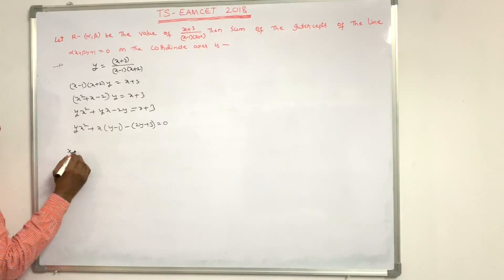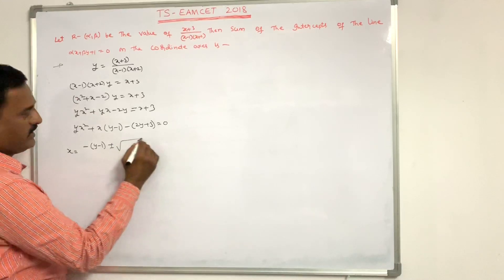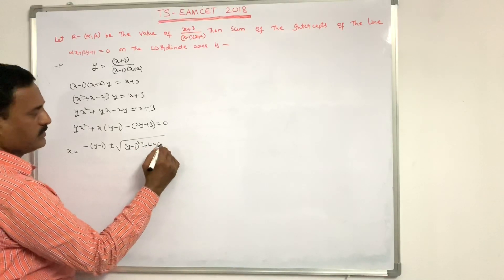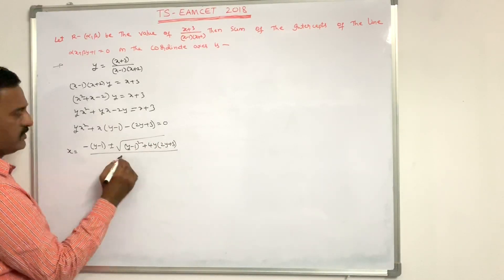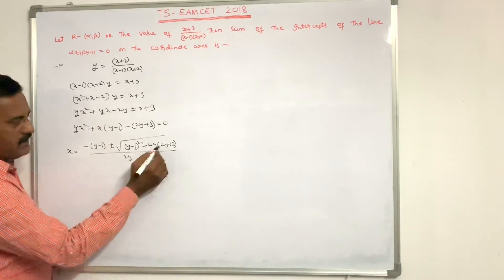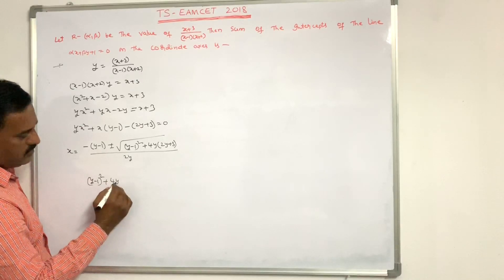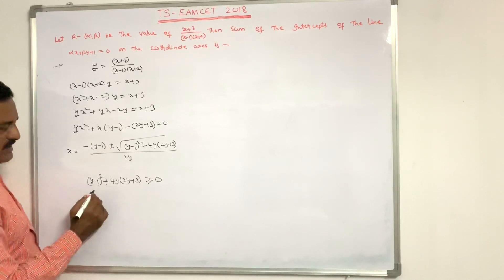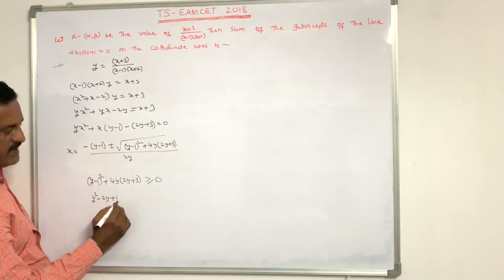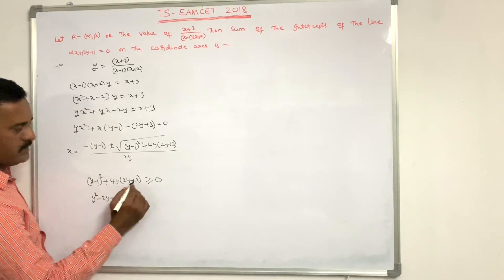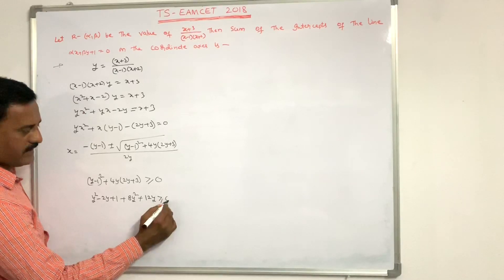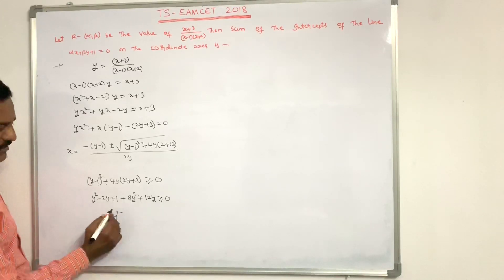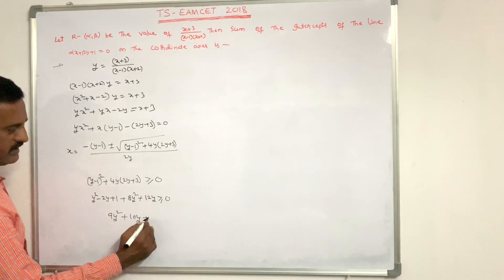For x to be real, the discriminant must be ≥ 0. That is b² - 4ac ≥ 0: (y - 1)² + 4y(2y + 3) ≥ 0. Expanding: y² - 2y + 1 + 8y² + 12y ≥ 0, giving 9y² + 10y + 1 ≥ 0.